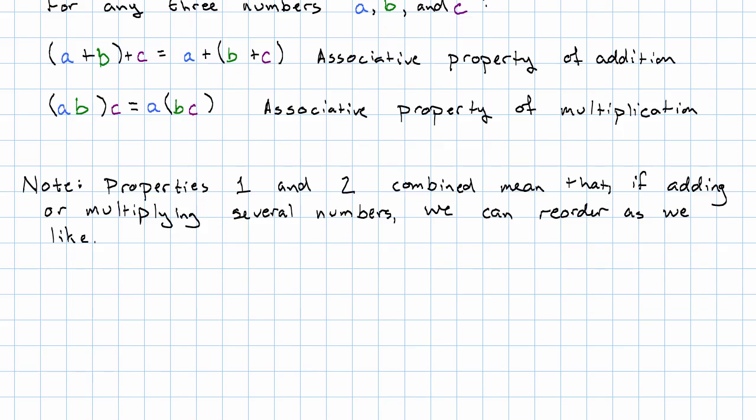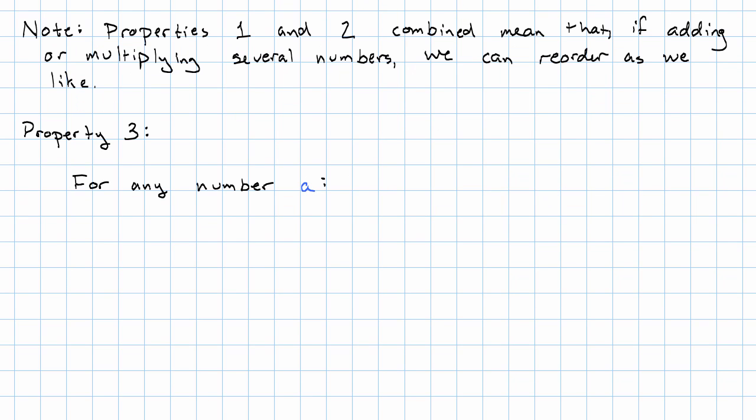Now, properties three and four have to do with one and zero. Property three says, for any single number you give me, I can add zero to it and it doesn't do anything. This is called the additive identity property. And I can multiply it by one and it doesn't do anything. This is called the multiplicative identity property.